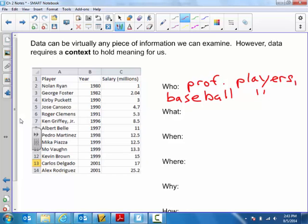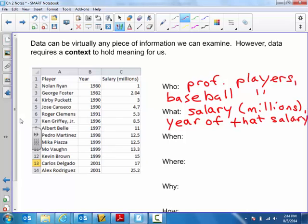What is being looked at with regard to these players? We've got two things - two columns. Probably most importantly, the salary in the millions for these players along with the year of that salary. So we've got two W's for each of these particular players. When is the data being reported? We can get that from the table by looking at the difference between highest and lowest years, from 1980 to 2001.